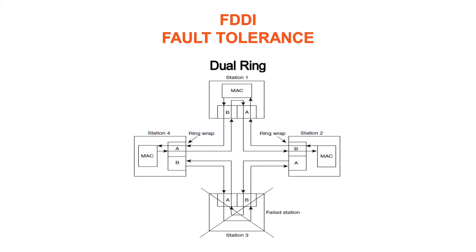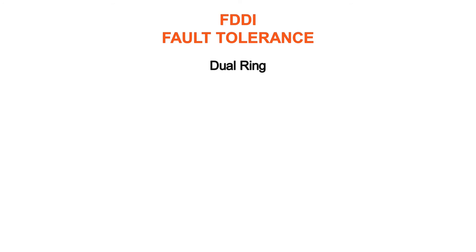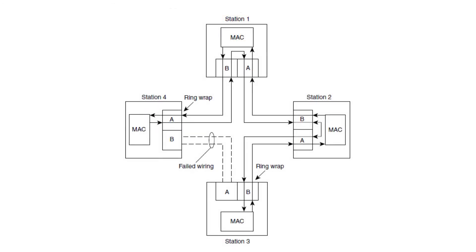When a single station fails, devices on either side of the failed or powered-down station wrap, forming a single ring. Network operation continues for the remaining stations on the ring. When a cable failure occurs, devices on either side of the cable fault wrap, and network operation continues for all stations. It should be noted that FDDI truly provides fault tolerance against a single failure only. When two or more failures occur, the FDDI ring segments into two or more independent rings that are incapable of communicating with each other.